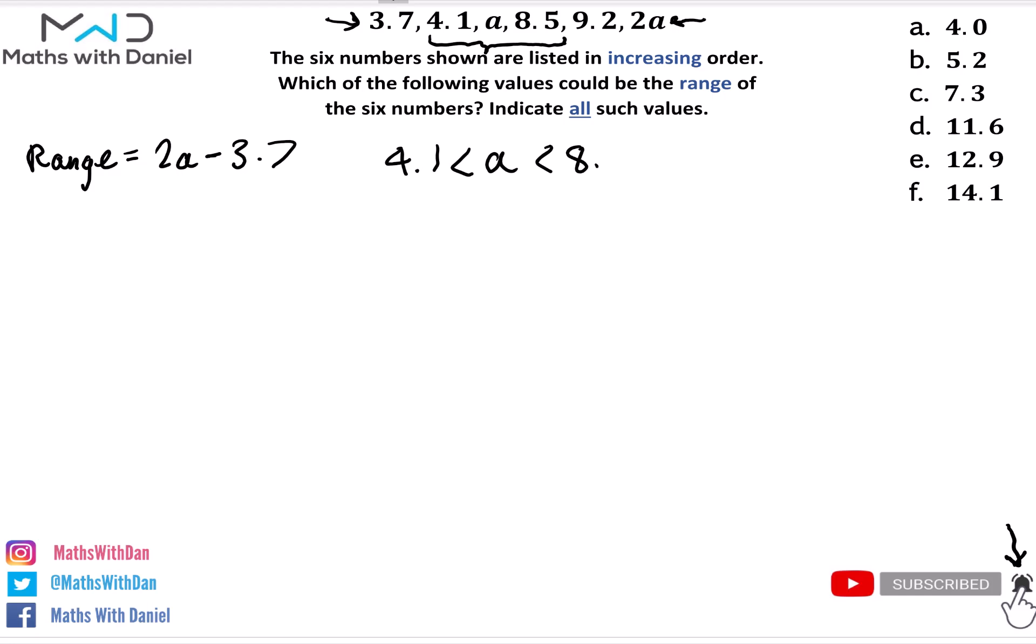If this is the restrictions on a, then the restrictions on 2a is very simple to calculate. We just need to times this inequality by two all the way through. So if I times the inequality by two, then I'm going to get 8.2 is less than 2a, and this is less than 17. Okay, now we have the restrictions on what 2a can be. 2a is in between 8.2 and 17.